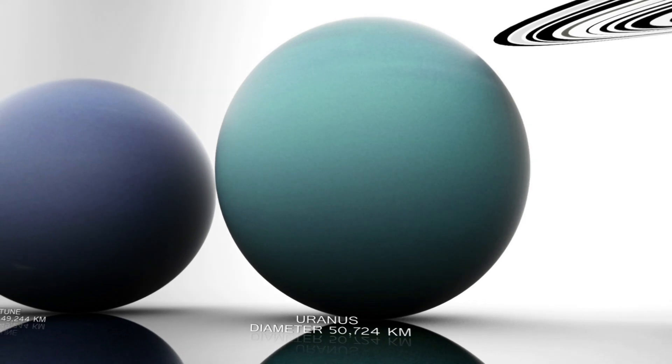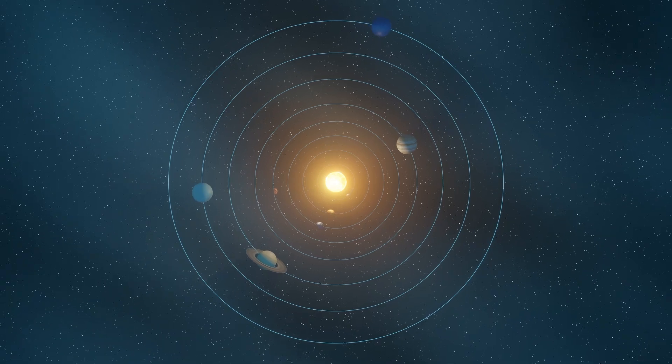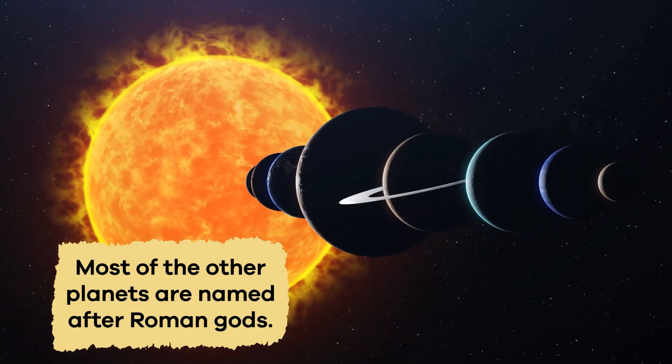Uranus is an especially unique planet. Even the origins of its name make it stand out because it is named after the Greek god of the sky. Most of the other planets are named after Roman gods.